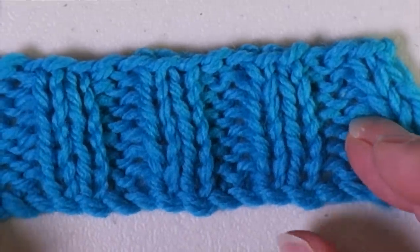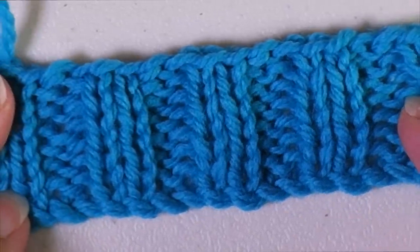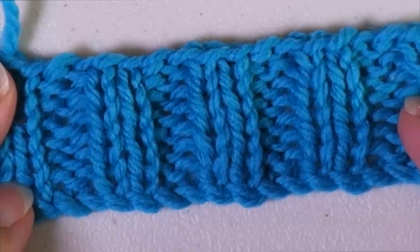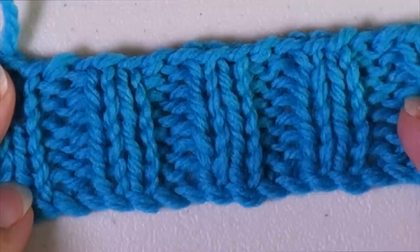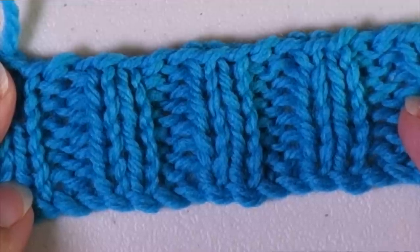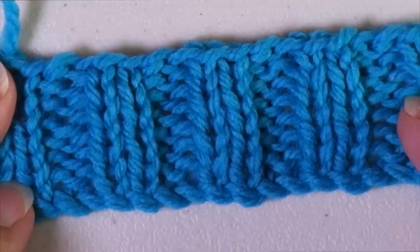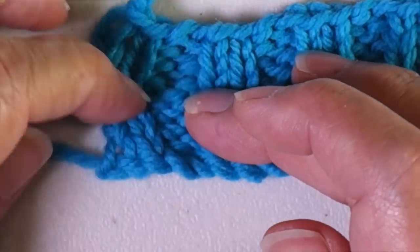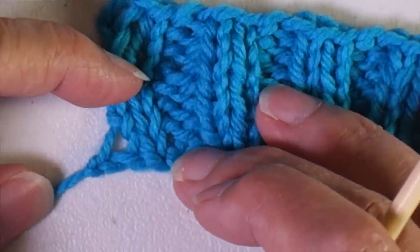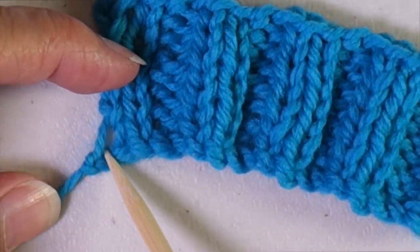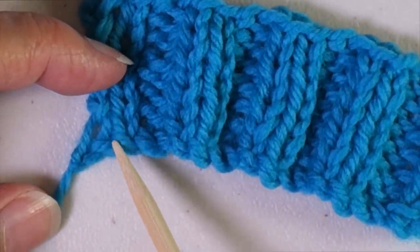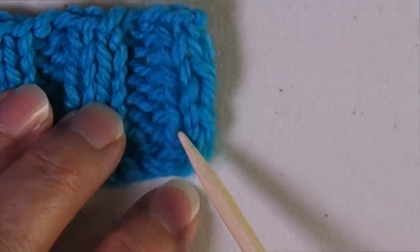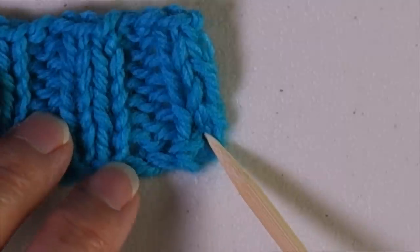The cable cast-on produces a really attractive edge. The problem with it is that the very beginning of the cast-on and the very end of the cast-on are not worked like the rest of the cast-on. So what you get is a starting stitch that looks a bit different here at the edges than the rest of these look. And you get an ending stitch that looks a little bit different, too.